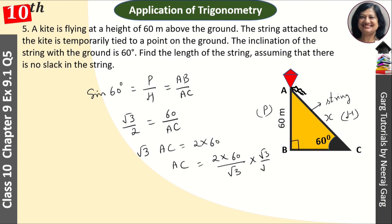Root 3 upon root 3. This will come from our 2 into 60 into root 3 upon root 3 into root 3. And 3 will cancel from 3 and 60. Then AC is equal to 40 root 3 centimeters.